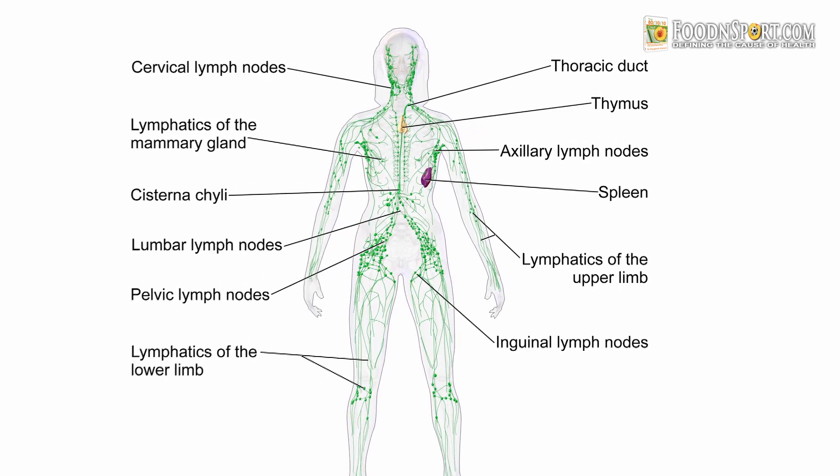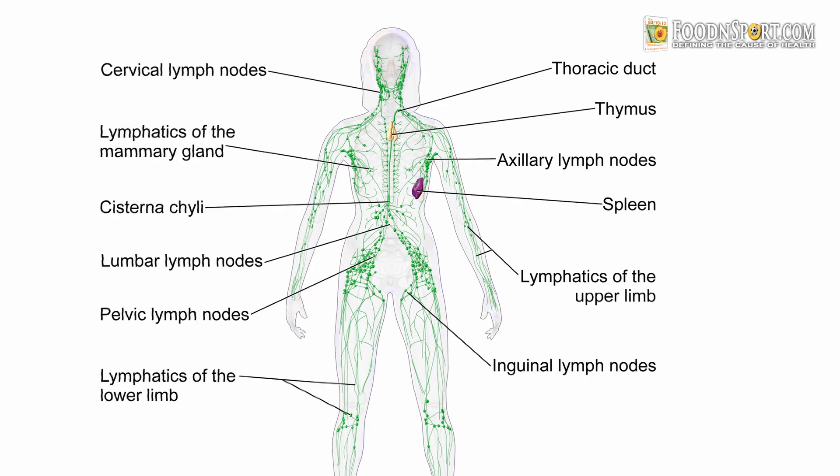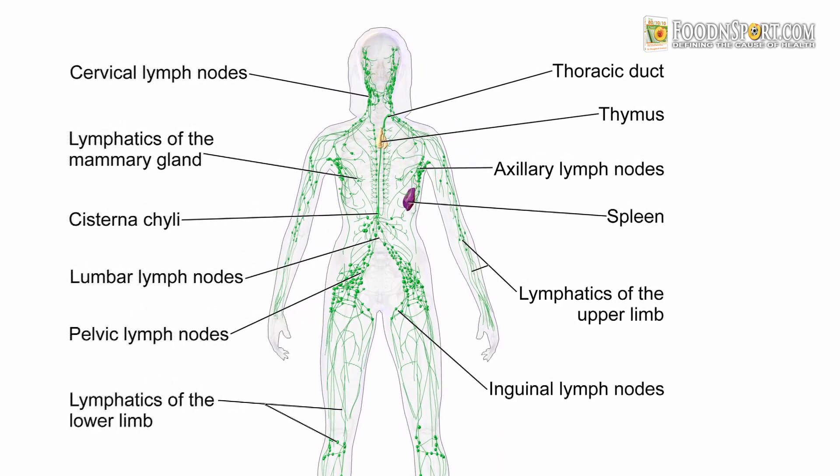The waste gets pumped out of the cells into the extracellular fluid, and from the extracellular fluid it's picked up by the lymphatic system. Now we're getting to the interesting part. The lymphatic system has a bunch of crap in it — it's a one-way system that starts at your fingers and toes and ends at the left thoracic duct. Except along the way there are way stations: lymph nodes. Full of bacteria and filters of all types — chemical, physical, and everything.